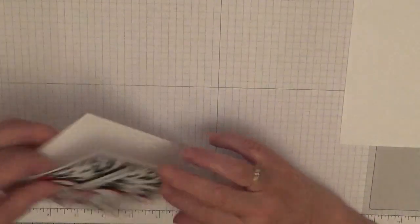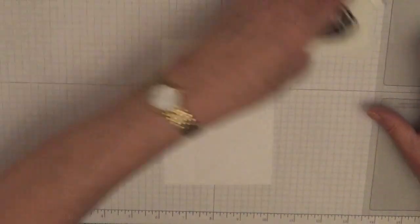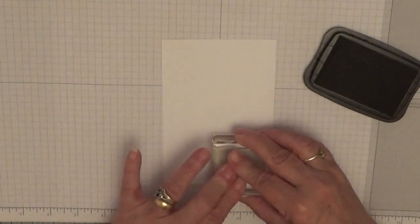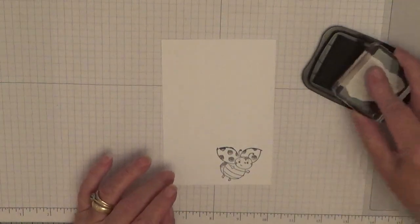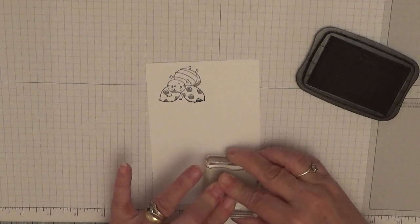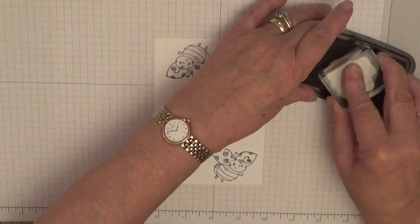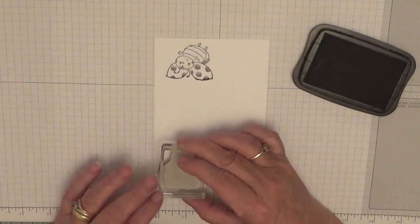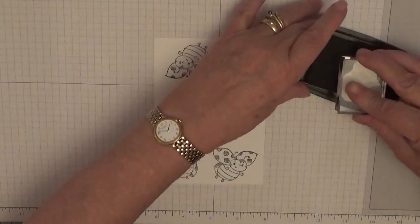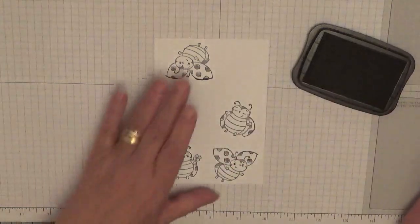So let's put that up there. I can see what I'm doing. Right, we're going to stamp our ladybugs in Memento ink. And we're going to stamp one. We just want one of each. Oh, that's not very dark. I think I need to re-ink my Memento. There's another one.